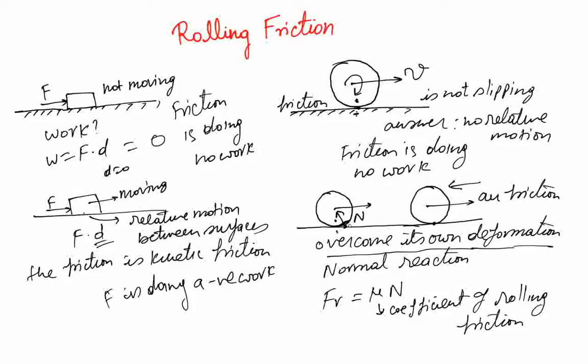So in problems we are going to solve in the following few lectures, we will assume that, first of all, there is no rolling friction, and second, that the wheel is just rolling without slipping.